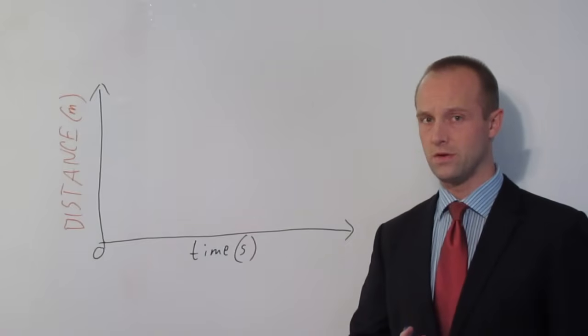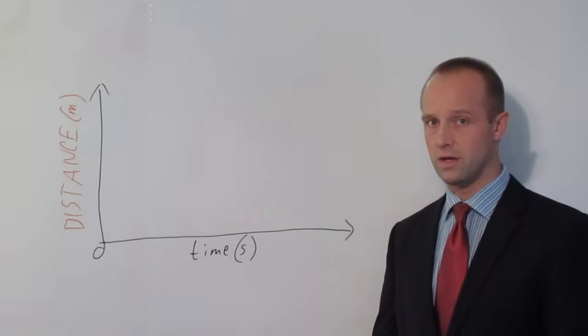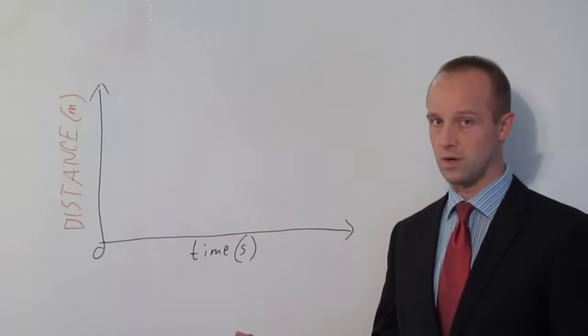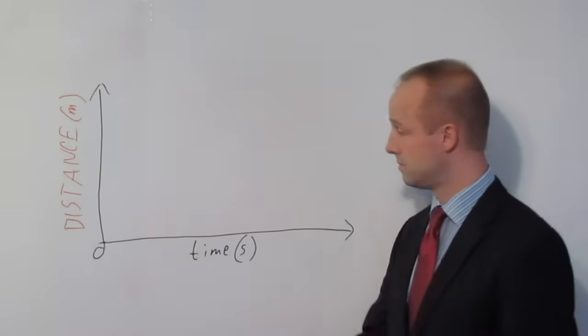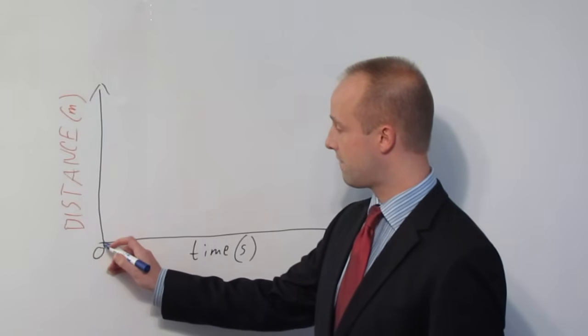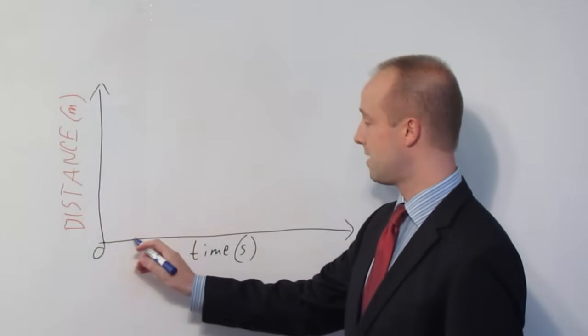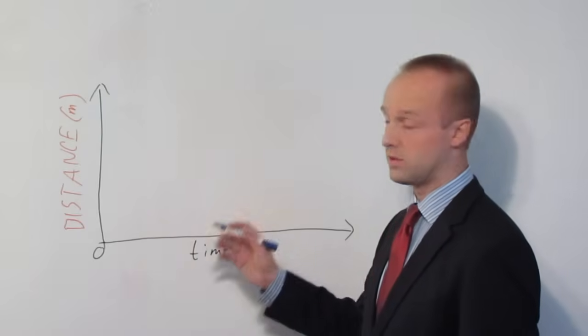So what you really need to know for your C is how to describe what's going on when you see one of these distance-time graphs, and it's really simple. Here is your distance, and the further away you get from this zero point, the further away you've traveled. And time is going to be moving along as that happens.